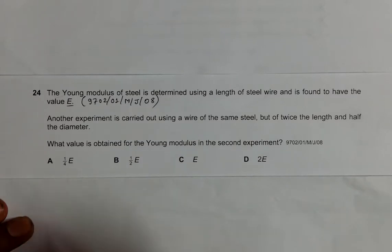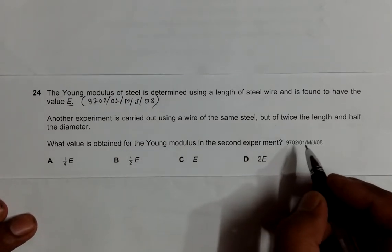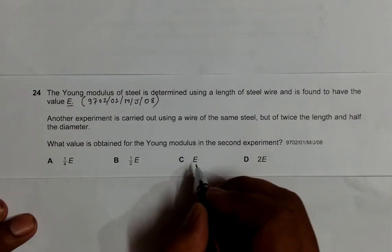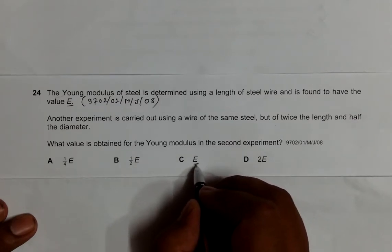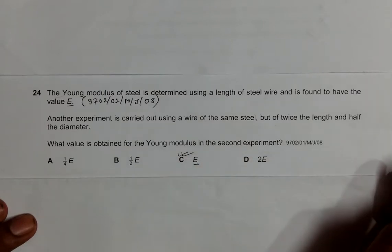and the settings are all the same, the value of Young's modulus in the second experiment should also be the same E. So choice C should be the correct answer. Surprised? No.